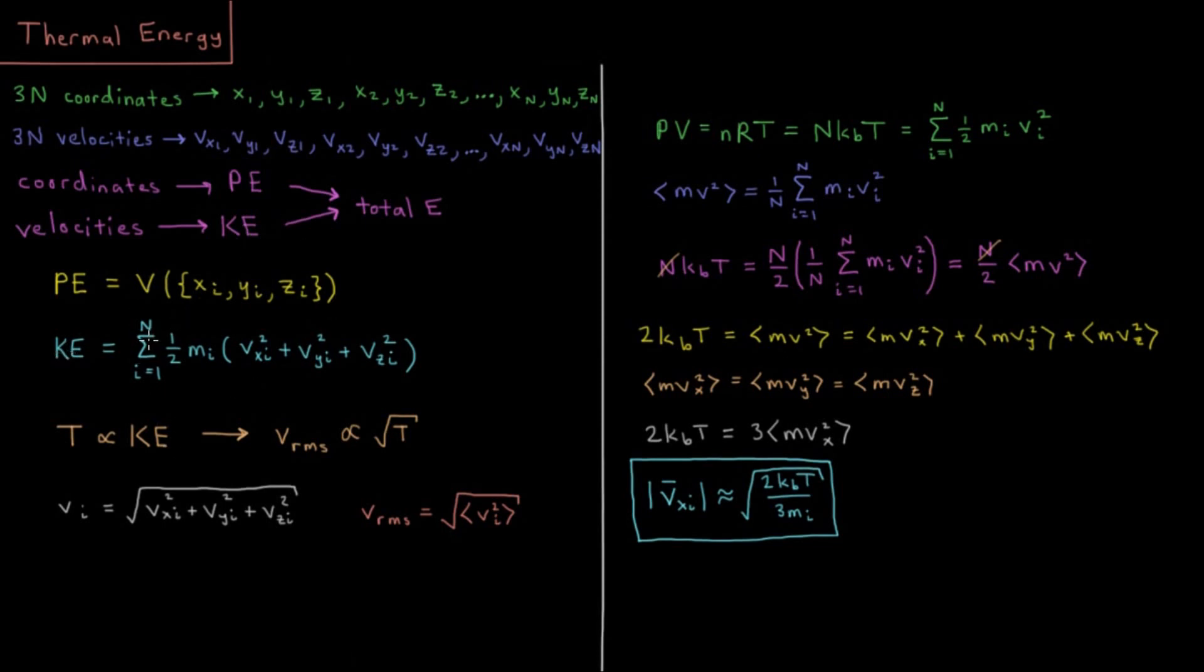The kinetic energy is going to be a sum over all of our atoms, i equals 1 to n, of one-half mv squared. Kinetic energy is one-half mass times velocity squared for every single particle. So we have one-half mass of the particle times vx² plus vy² plus vz². So the total velocity would be the square root of this value in parentheses.